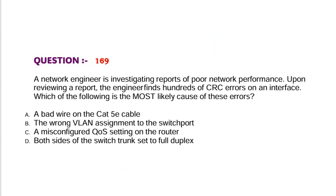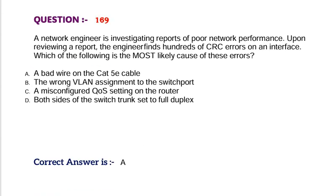Question: A network engineer is investigating reports of poor network performance. Upon reviewing a report, the engineer finds hundreds of CRC errors on an interface. Which of the following is the most likely cause of these errors? Option A, a bad wire on the Cat5e cable. Option B, the wrong VLAN assignment to the switch port. Option C, a misconfigured QoS setting on the router. Option D, both sides of the switch trunk set to full duplex. Correct answer is Option A.